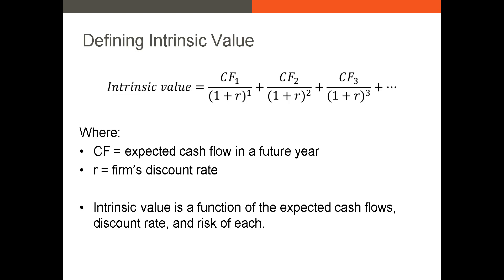To further illustrate this point, let's look at the formula for intrinsic value. When we have the data to do so, we often model intrinsic value as the present value of an asset's discounted cash flows — forecasting cash flows the investor will receive each year and discounting those by some discount rate. The determinants of intrinsic value are those that affect cash flows, discount rates, and the volatility of both. We care about this volatility because these values are not certain, and if we're uncertain about future cash flows, we might reduce the intrinsic value to account for that uncertainty.